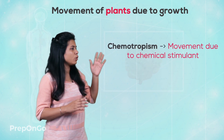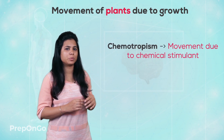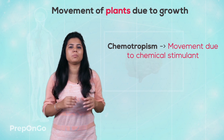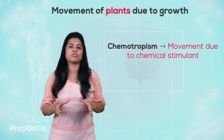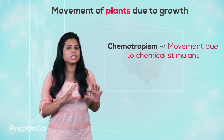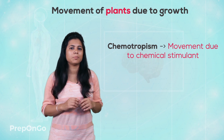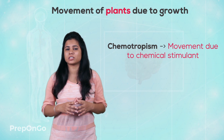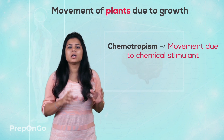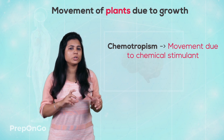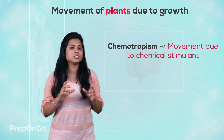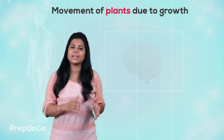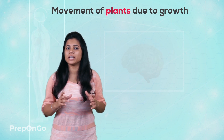Now let's see the fourth agent, which is chemotropism. Chemotropism does not affect the whole plant — it affects only a part of the plant, involving chemical changes in those parts. We will study chemotropism in detail in the next sections. For example, the growth of the pollen tube during fertilization due to the presence of sugar in the style is one example. So we have seen the various tropisms which are present in plants.